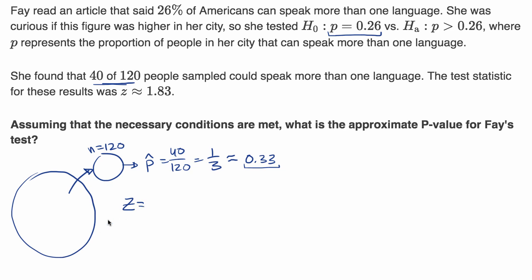So the z statistic, and we did this in previous videos, you would find the difference between this, what we got for our sample, our sample proportion, and the assumed true proportion. So 0.33 minus 0.26.